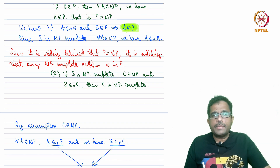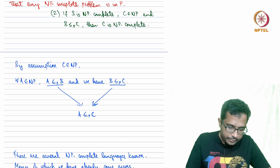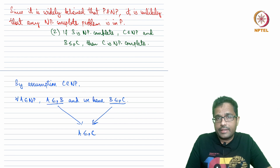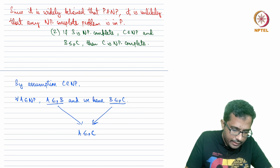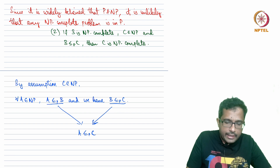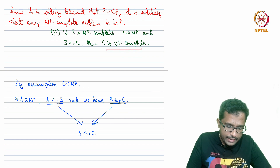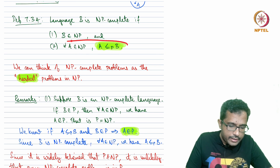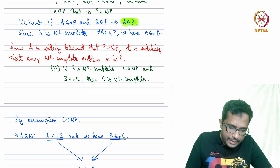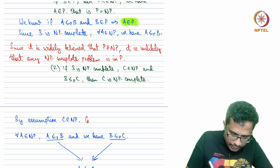The second remark: suppose B is NP-complete and suppose there is another language C that is in NP, and B reduces to C in polynomial time. Then C is also NP-complete. To show that C is NP-complete we need to show two things: one, that C is in NP, and two, that all languages A in NP reduce to C. By assumption C is in NP, so condition one is met.